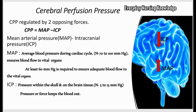ICP is intracranial pressure — the pressure within the skull and brain tissue. Normal ICP is 5 to 15 mmHg. As ICP increases, blood flow to the brain is affected. So CPP is regulated by two opposing forces, MAP and ICP, and you calculate CPP by subtracting ICP from MAP.